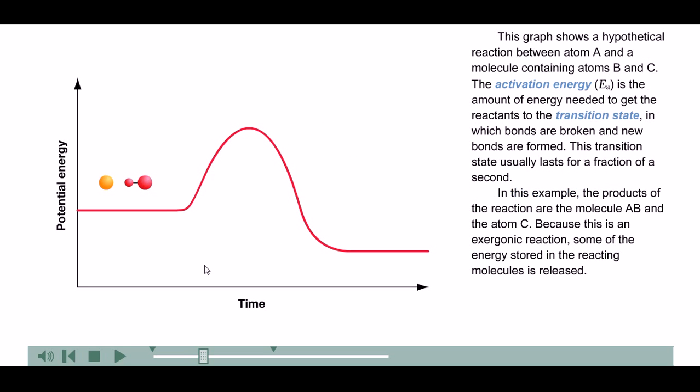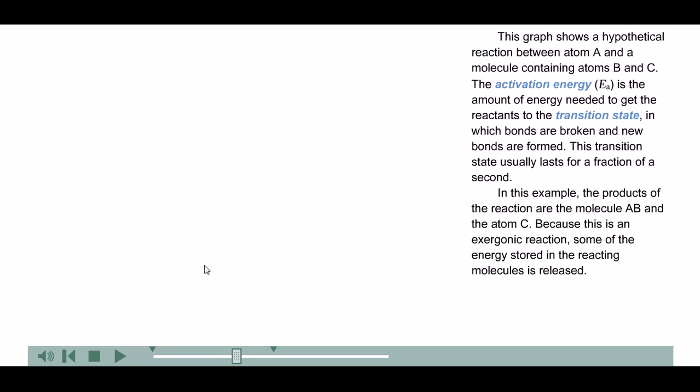This graph shows a hypothetical reaction between atom A and a molecule containing atoms B and C. The activation energy, Ea, is the amount of energy needed to get the reactants to the transition state in which bonds are broken and new bonds are formed. This transition state usually lasts for a fraction of a second. In this example, the products of the reaction are the molecule AB and the atom C. Because this is an exergonic reaction, some of the energy stored in the reacting molecules is released.